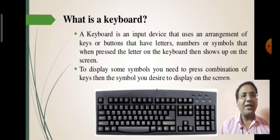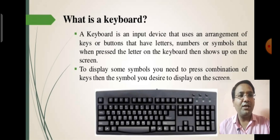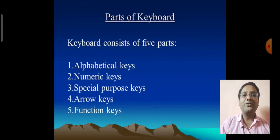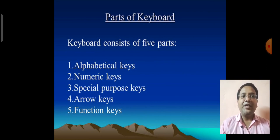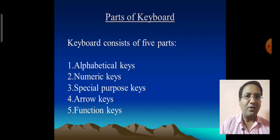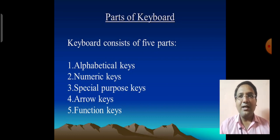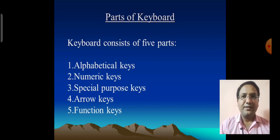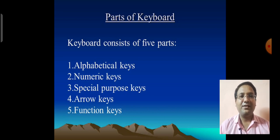Commonly there are five types of keys available on the keyboard. Parts of the keyboard. Keyboard consists of five parts. First alphabetical keys from A to Z. There are 26 alphabetic keys on a keyboard. The alphabet A to Z are marked on them. You can type words, paragraph, letters with the help of these keys.